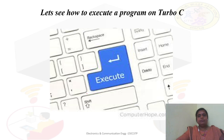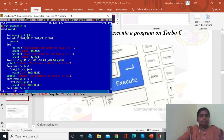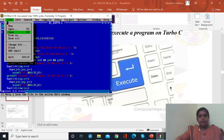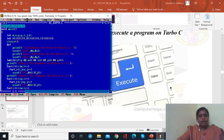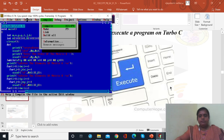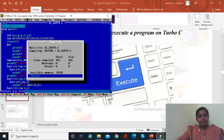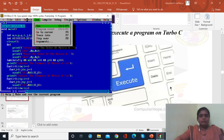Now we will see the execution of the program using Turbo-C. I have opened Turbo-C. The steps to write and execute the program are: first write the program, then go to File and save it, or use shortcut key F2 to save. Once saved, compile the program using shortcut key Alt+F9. This shows whether any errors or warnings are there. If errors exist, make corrections. Here no error is displayed, so we continue to run the program using shortcut key Ctrl+F9.